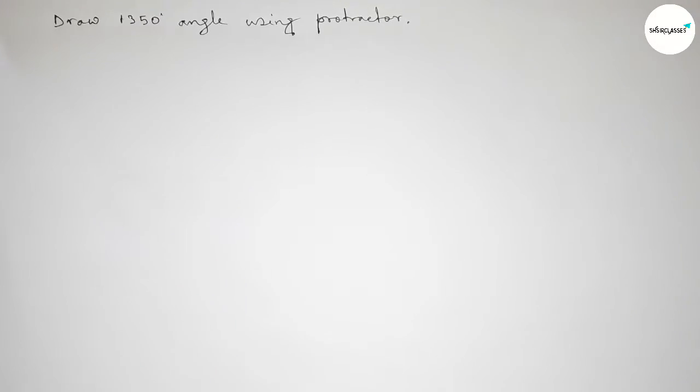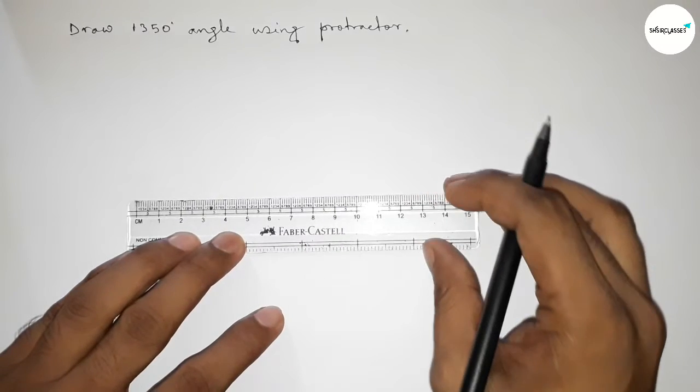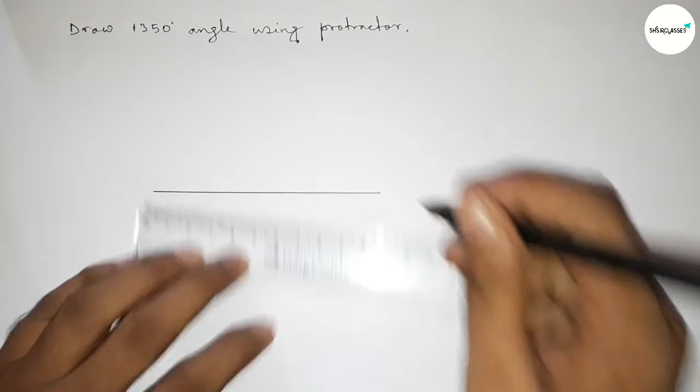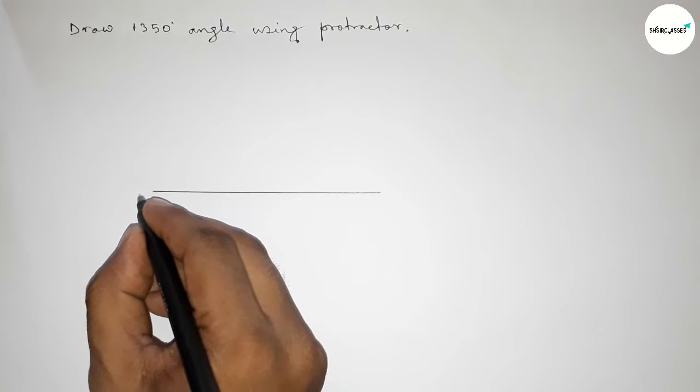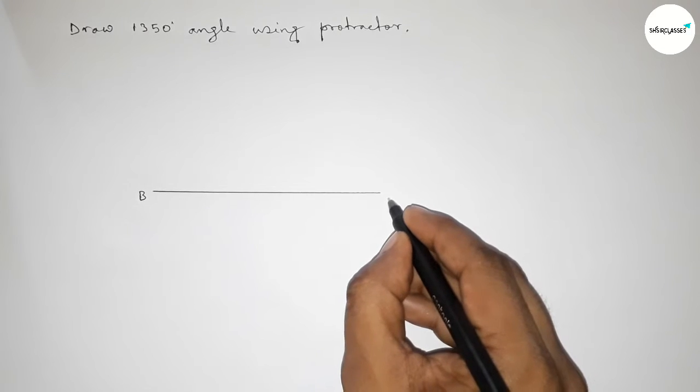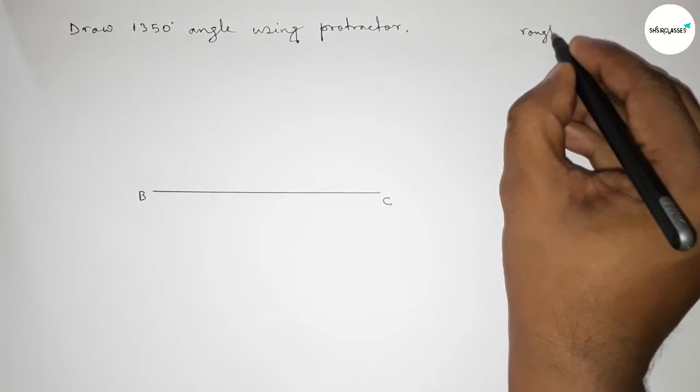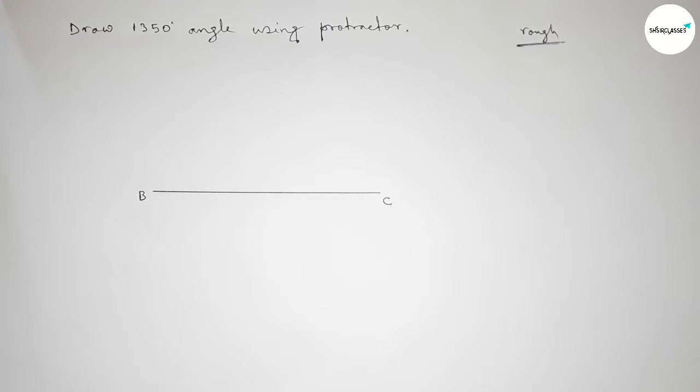First of all we have to draw here a straight line of any length and taking here point B and here C. Now roughly discussing some important calculation here. So if we add 360 degree angle four times...